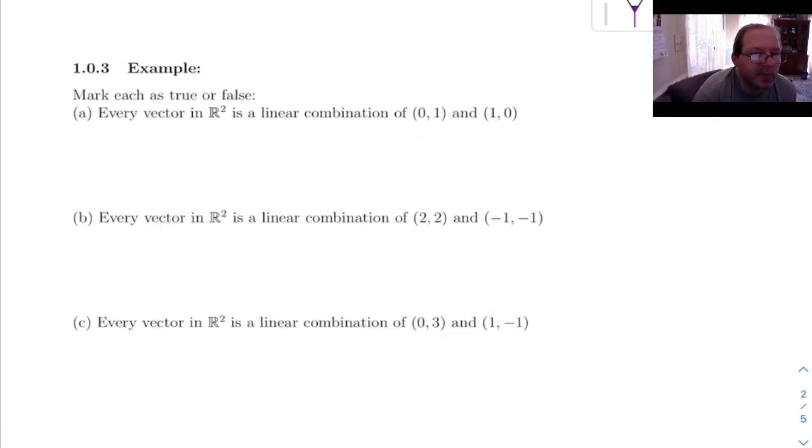Example 1.03 is asking us to mark these things as true or false. First one says every vector in R2 is a linear combination of (0, 1) and (1, 0). To answer this, there is a way you could do it using a matrix, but these three problems we can do them just using some geometric reasoning.